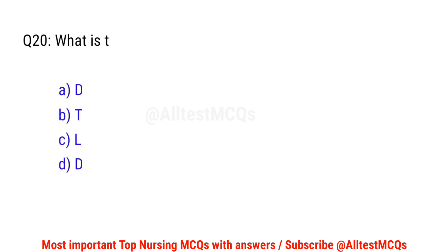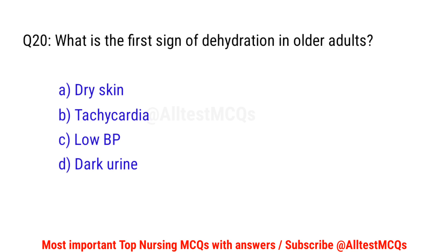Question number 20. What is the first sign of dehydration in older adults? The correct option is B: Tachycardia.